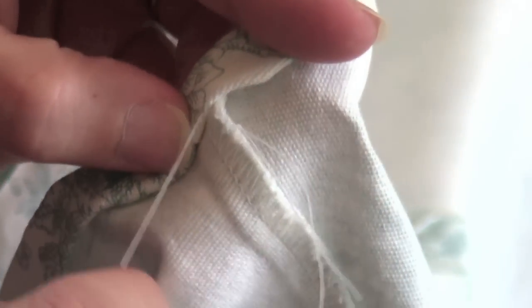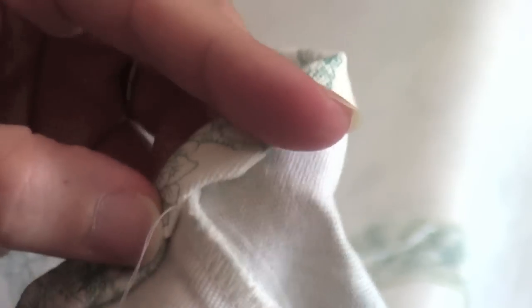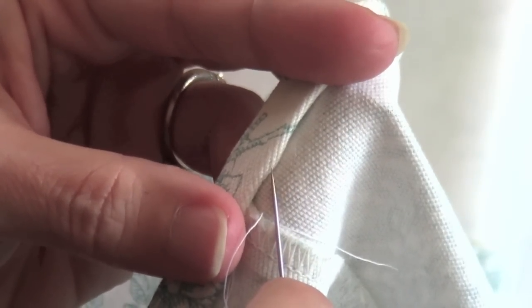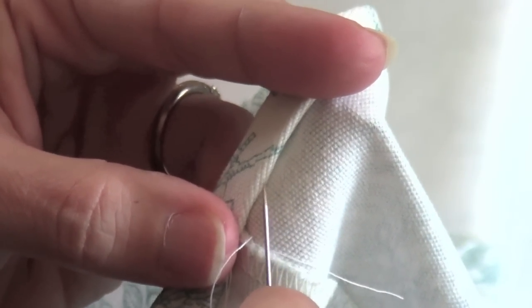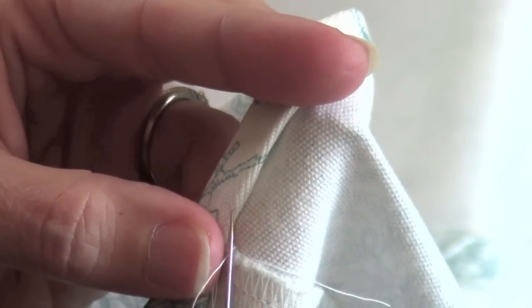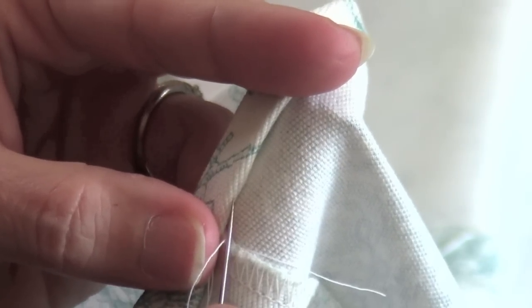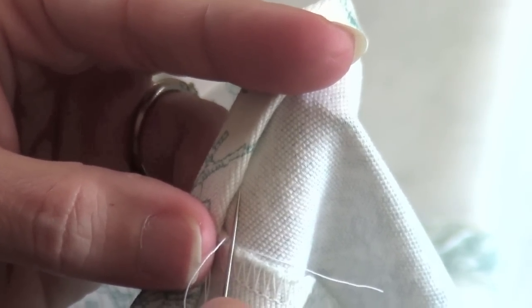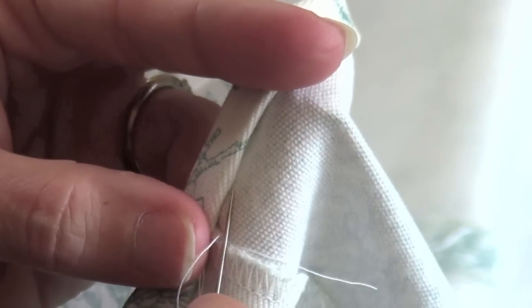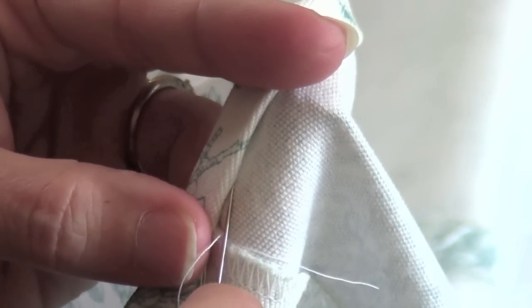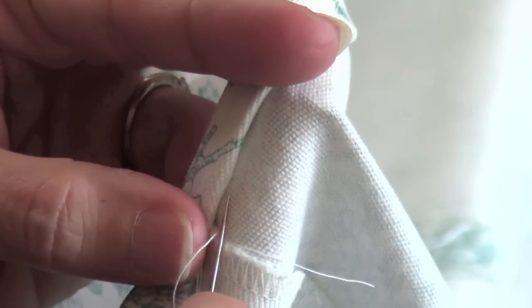All we're going to do as we go along is every quarter inch or so, we are going to go through the folded edge here, and then we're going to pick up a very tiny amount on the back piece. We do not want to grab too much back here because it will show on the front of the skirt.